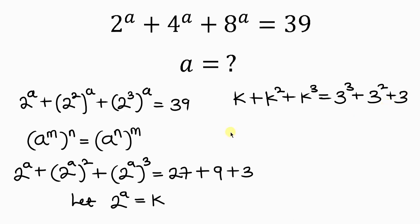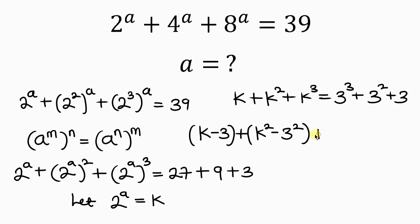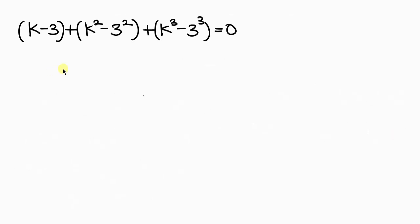Our next step will be to rearrange. I have k from here, so this is a k, which is the number. I'm going to be moving the number to the left-hand side, so it becomes minus 3 in a parenthesis, plus k squared, then when I move 3 squared to the left it becomes minus 3 squared in a parenthesis, plus k cubed, and when I move 3 cubed to the left it becomes minus 3 cubed in a parenthesis, equal to 0.